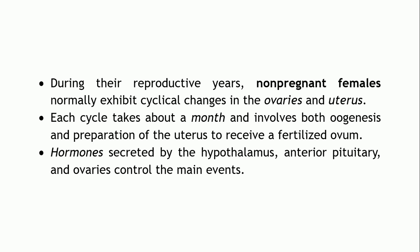During the reproductive years of non-pregnant females — and this is very important, non-pregnant females — when pregnancy does not occur, throughout the reproductive years there are some cyclic changes taking place in the ovaries and the uterus. Each cycle takes around about one month to complete, and several processes are involved, like oogenesis as well as follicular development, and also there will be preparation of the uterus to receive the fertilized ovum.